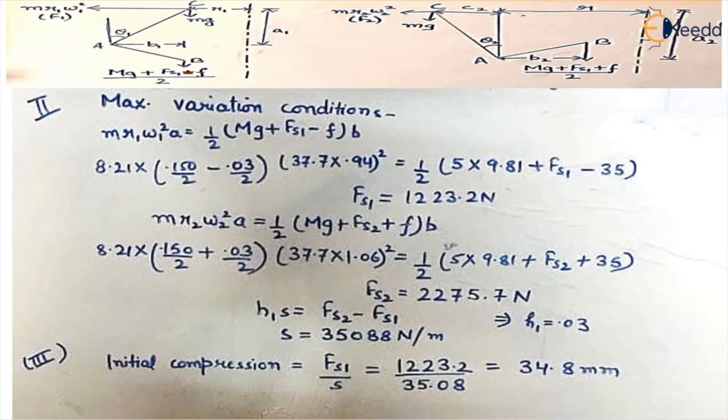In case 2, again we'll use the same equation with only difference that this distance from axis gets added up. You see this C2 plus R gets added up, and it makes R2 into 6% increase in speed, so that is 1.06. Rest all the values remain same. Friction gets added up because in this case sleeve is moving upward, so your frictional force is acting downward, so plus 35. You calculate and you get the value Fs2.